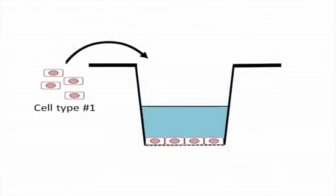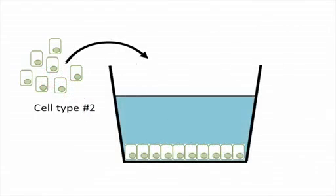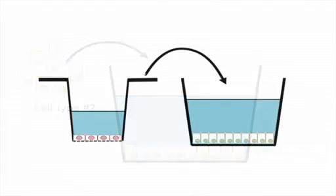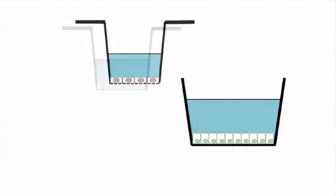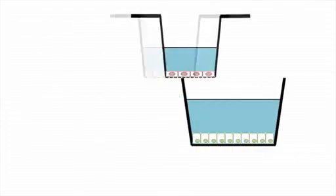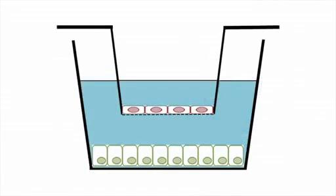We start by seeding cell type number one in inserts and seeding cell type number two in a multi-well tissue culture plate. The second step is to transfer the inserts into the wells of the plate containing cell type number two. Ultimately, this gives the ability to harvest the two cell types as well as the respective supernatants.